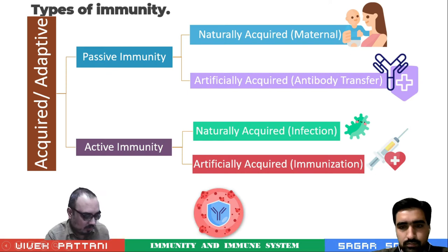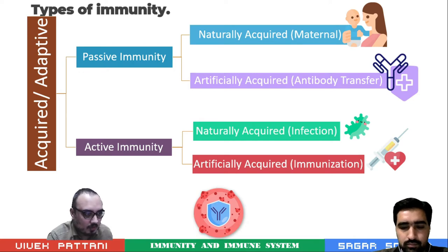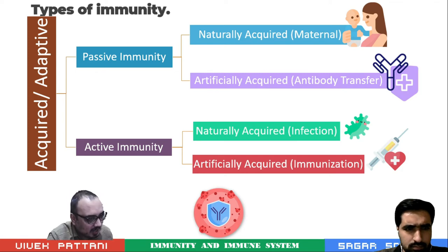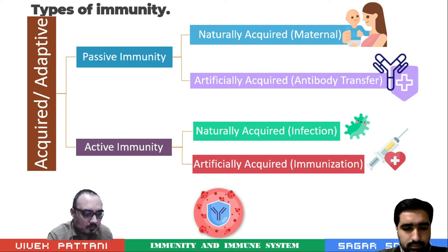Now moving forward with acquired or adaptive immunity, also known as specific immune response. It is more effective against various microorganisms. This acquired response also retains the memory of previous exposure to the antigen, so the next time it encounters the same antigen, the immune response will be stronger. The acquired immune response takes several days to develop, but once it develops the immune system is incredibly effective.